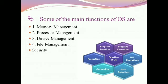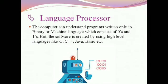The computer can understand programs written only in binary or machine language, which consists of zeros and ones. But software is created using high-level languages like C, C++, Java, Basic, etc. From this picture, you can easily understand that the computer understands only machine language and binary.